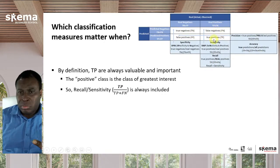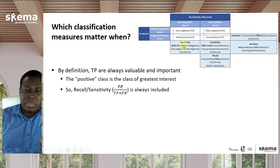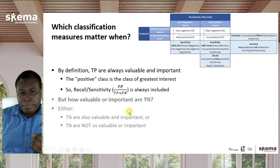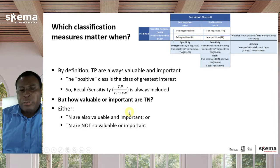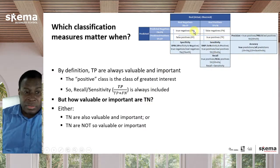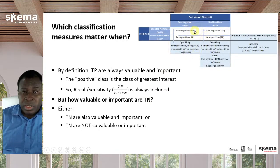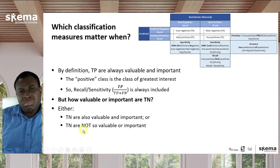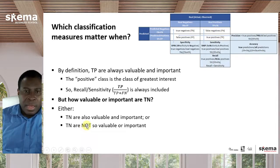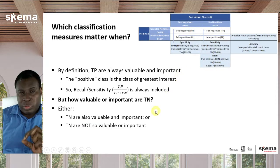The question is: will recall or sensitivity be paired with precision, or with specificity? The main criterion is how valuable are true negatives. Either true negatives are also important — not just true positives — or in some scenarios, true negatives are not that valuable or important. That distinction determines which pair of measures to use.